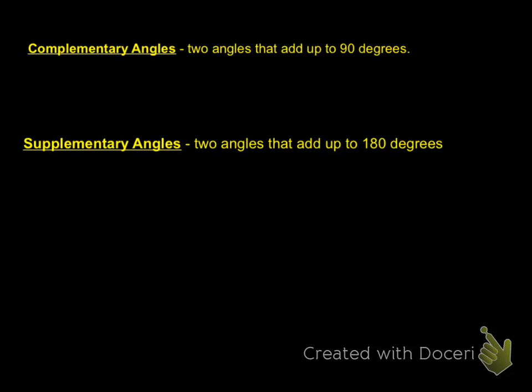To wrap this video up, remember: C comes before S, and 90 comes before 180 degrees. Complementary angles are two angles that add up to 90 degrees. Supplementary angles are two angles that add up to 180 degrees. If at any point you can't remember this information, it may be helpful to go back and watch the video one more time.